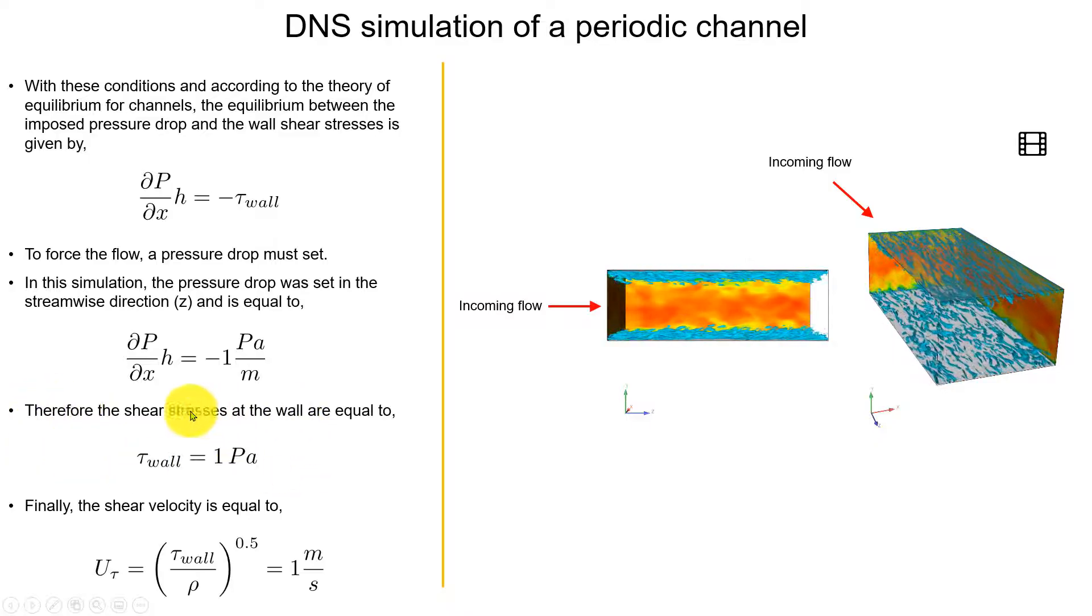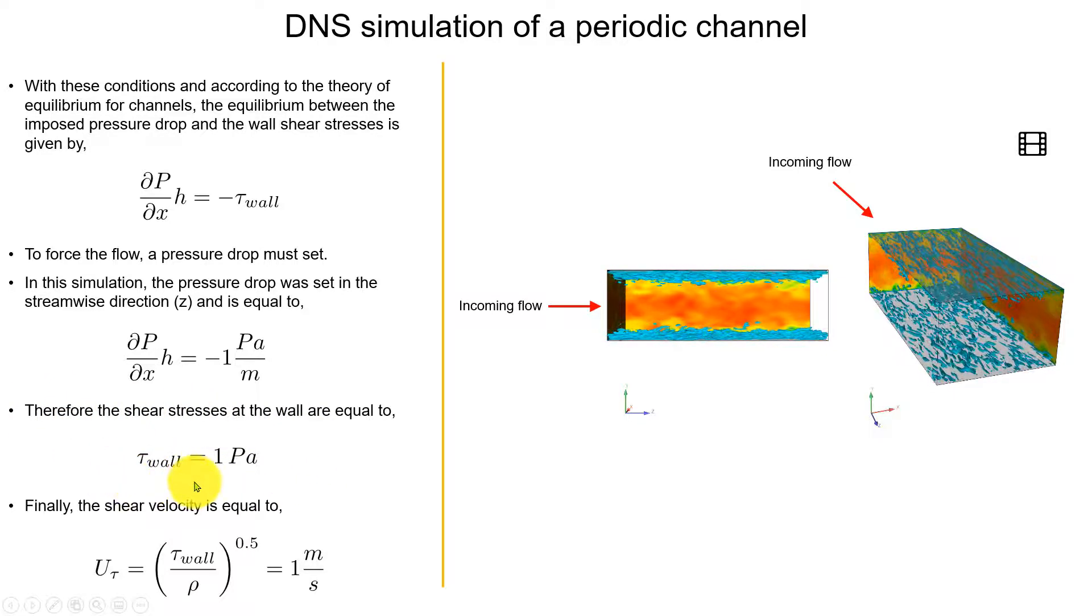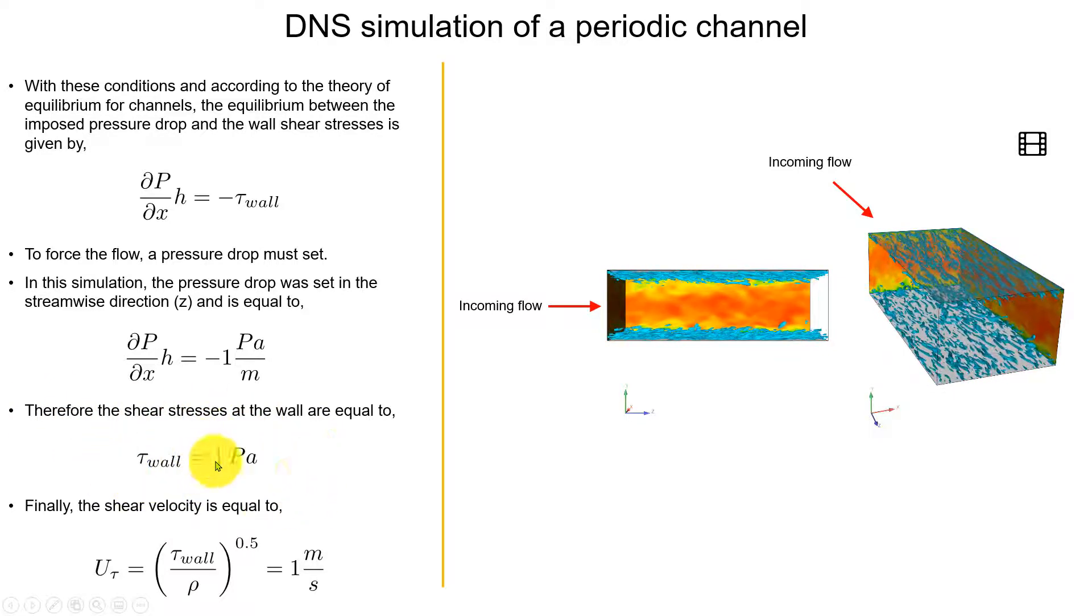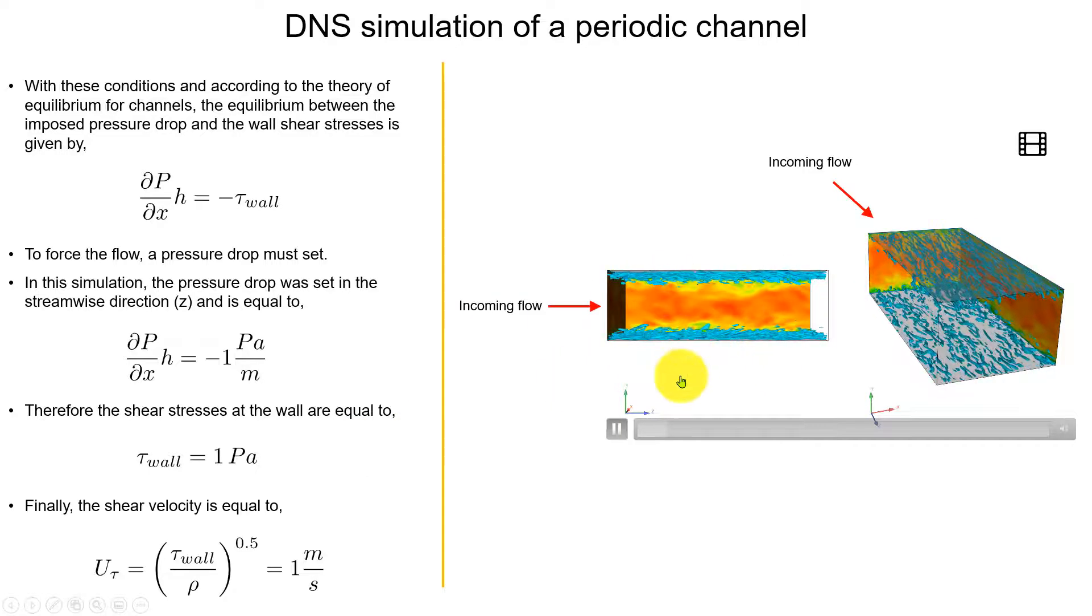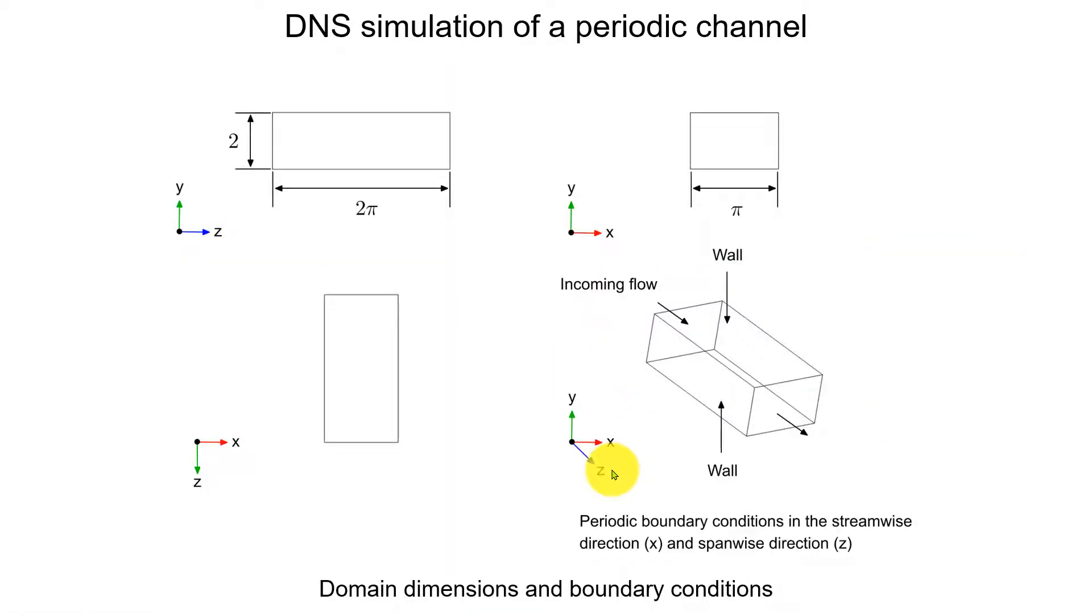Look at that here. According to the solution, the shear stress at the wall should be equal to 1 Pascal. As you see here, it's a very small domain. Here we have boundary conditions. Basically this kind of simulation, you set everything periodic here and tight on bottom walls.